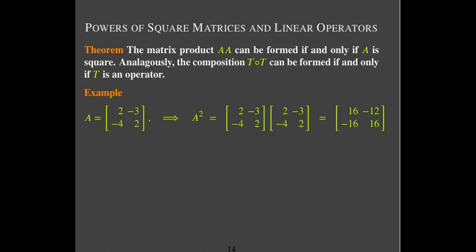What's important to note is that A squared is not the square of the individual entries. I don't take 2 squared, negative 3 squared, negative 4 squared, and 2 squared — that is simply wrong, the wrong idea. You have to perform the proper matrix-matrix multiplication.